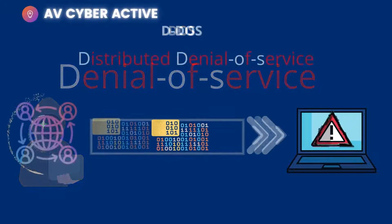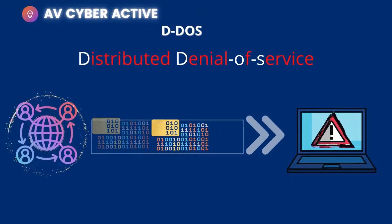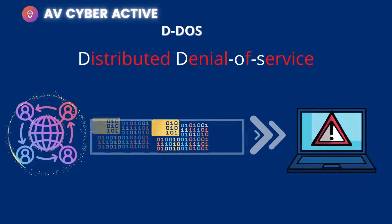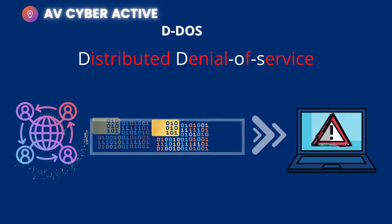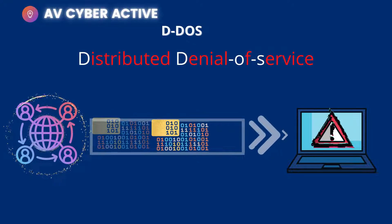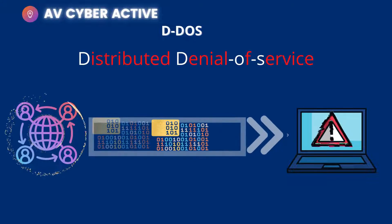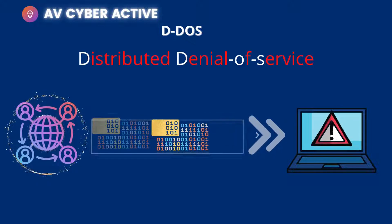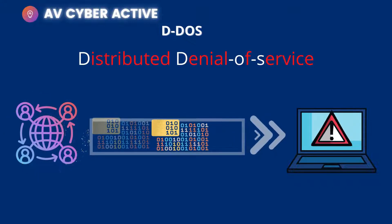But in DDoS, there is a group of bad actors who take over a lot of bot machines, which we also call a botnet. They try to send a lot of spoofed TCP or UDP packets from different geographical locations and attack a single server. The server gets so busy replying to all those packets that legitimate users cannot reach out.